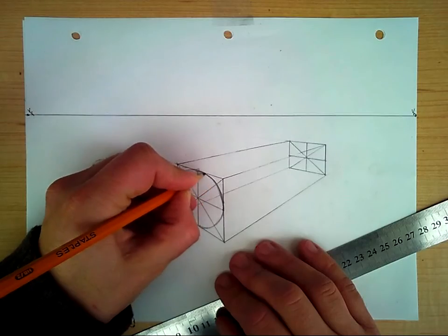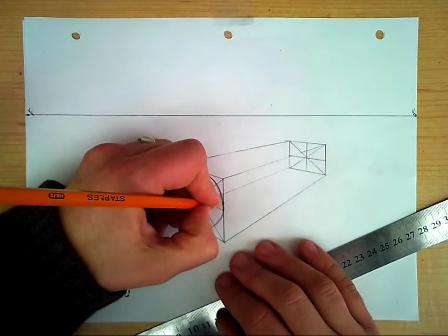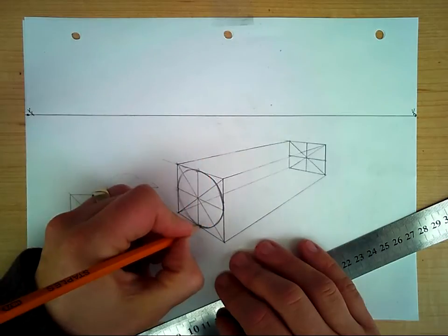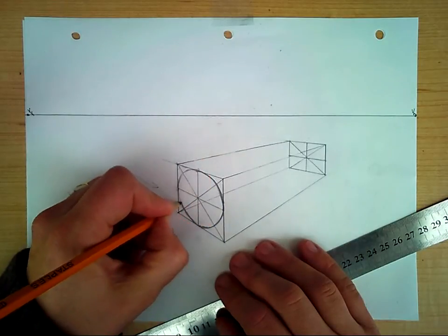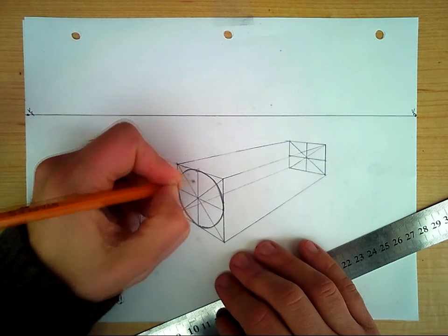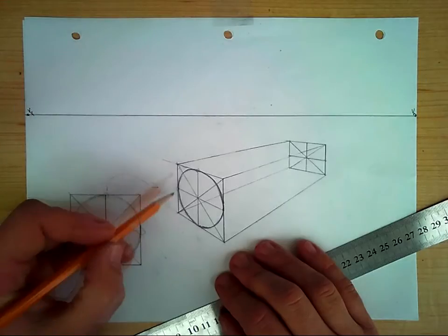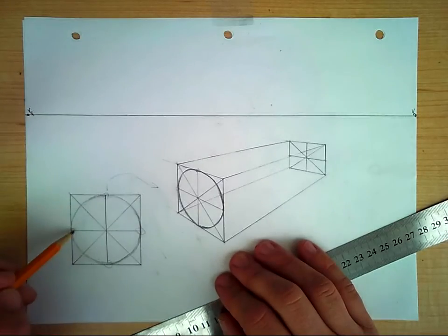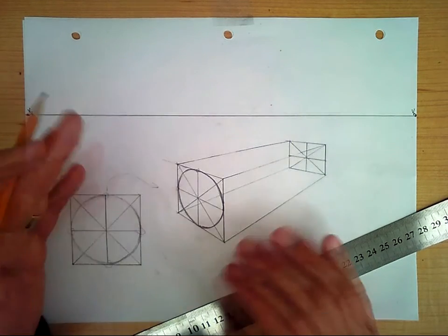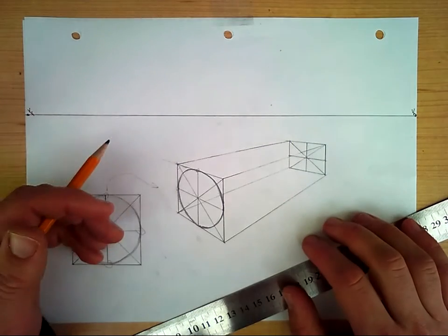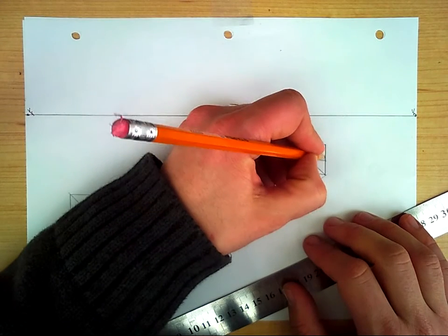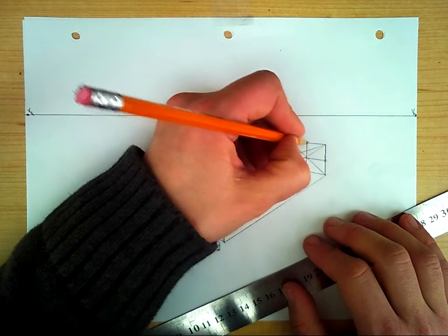Once you get it, then you can redraw your line in a more defined way. There it is, there's that perfect sphere in two-point perspective. It's actually a bit squished in from the back side.